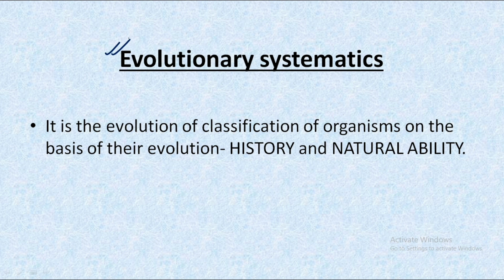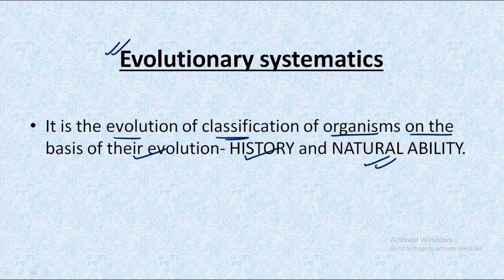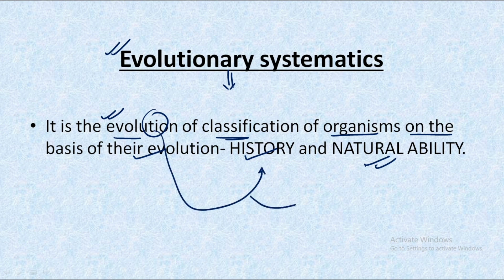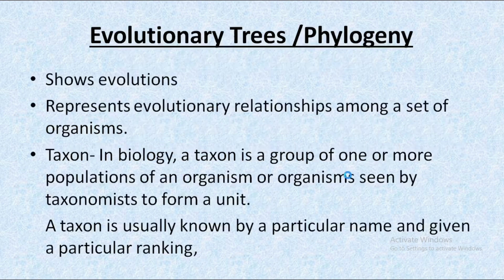Talking about evolutionary systematics — as the word suggests, it is the evolution of the classification of organisms based on their evolution in terms of history and natural ability. In simple words, evolutionary systematics means studying the classification of organisms where that classification is mainly based upon evolution, specifically their previous history and natural abilities from the initial times.